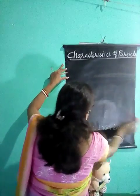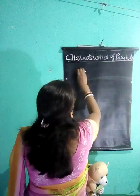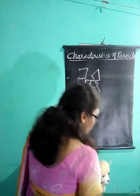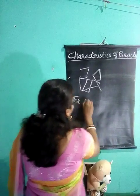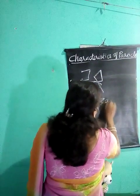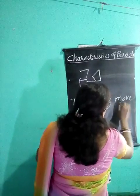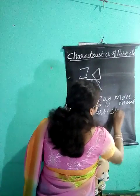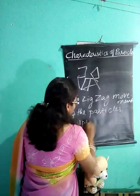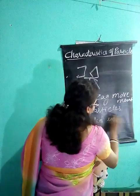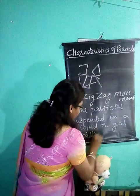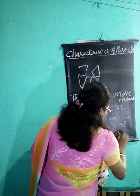Now, one particle and another particle are moving — they do not have any particular direction. The zigzag movement of the particles suspended in a liquid or gas is called Brownian motion.